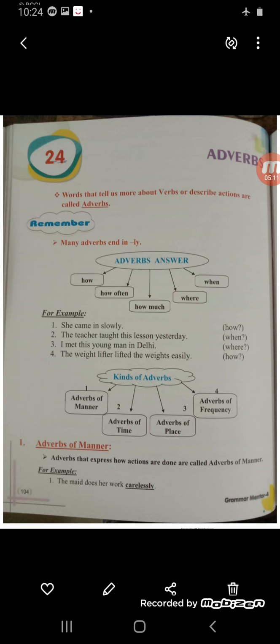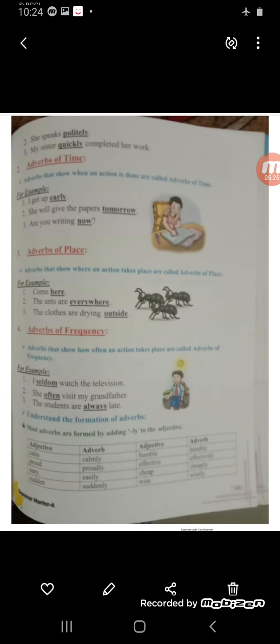The maid does her work carelessly. What is the manner of her doing the work? Carelessly — so 'carelessly' is an adverb of manner. She spoke politely — how did she speak? Politely, so 'politely' is an adverb of manner. My sister quickly completed the work — how did your sister complete the work? Quickly. So 'quickly' is an adverb of manner.